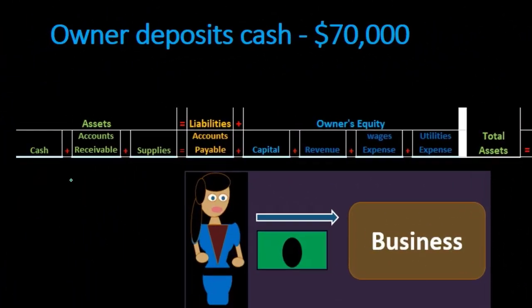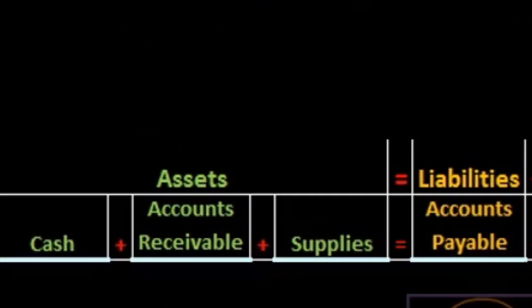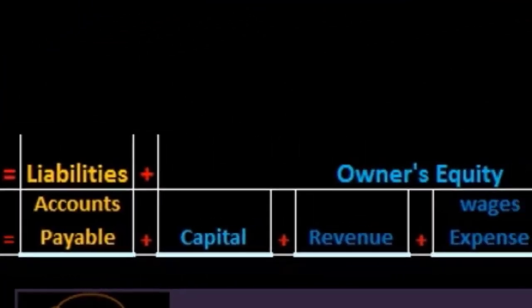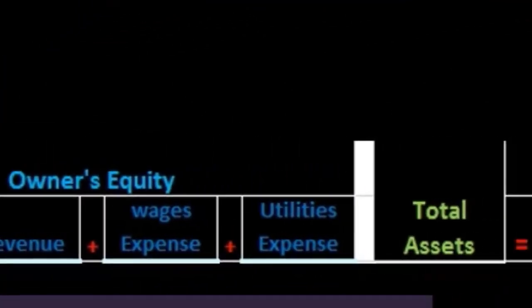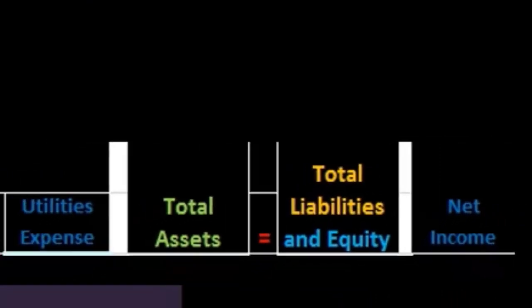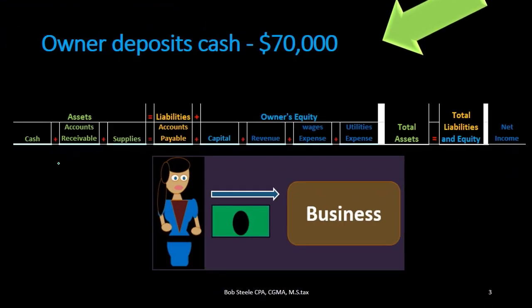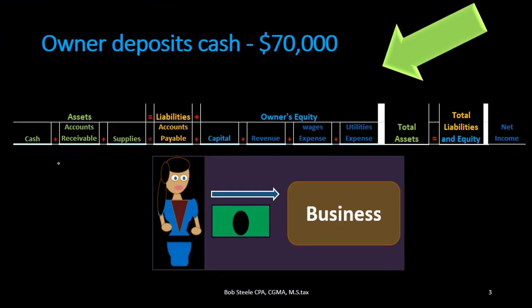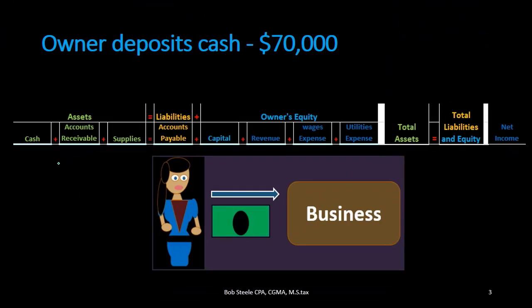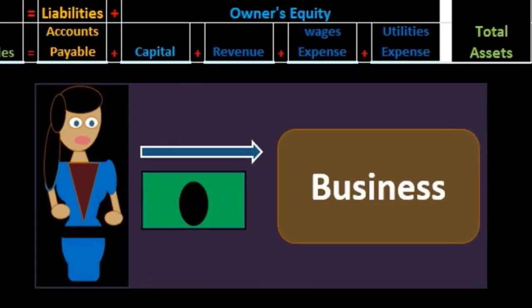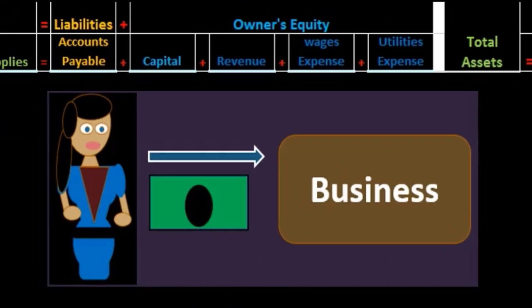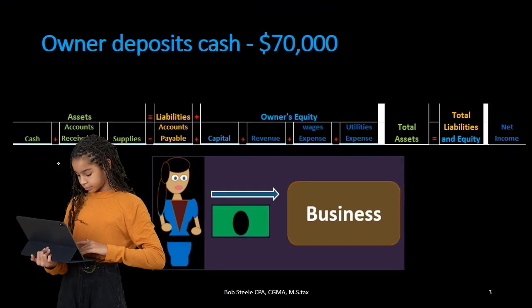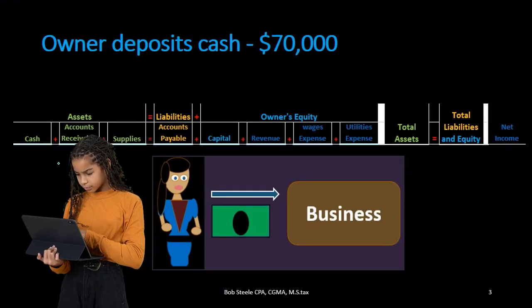Remember that the accounting equation has assets, liabilities, and equity. When we record transactions using the accounting equation we often use the accounts involved — this is sometimes called an extended accounting equation. It's useful to start recording transactions in this format and then later move to debits and credits, since it is an equation and everyone has some experience with equations.